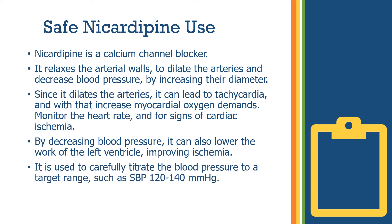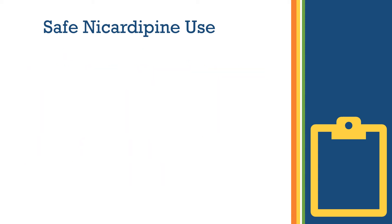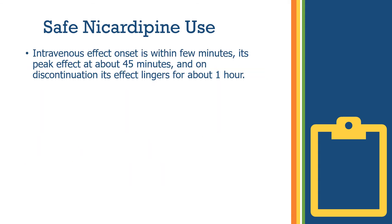Intravenous nicardipine is used to carefully titrate the blood pressure to a target range, such as a systolic blood pressure of 120 to 140 millimeters of mercury. The intravenous effect onset is within a few minutes, and its peak effect is reached at about 45 minutes. On discontinuation, its effect lingers for about one hour.